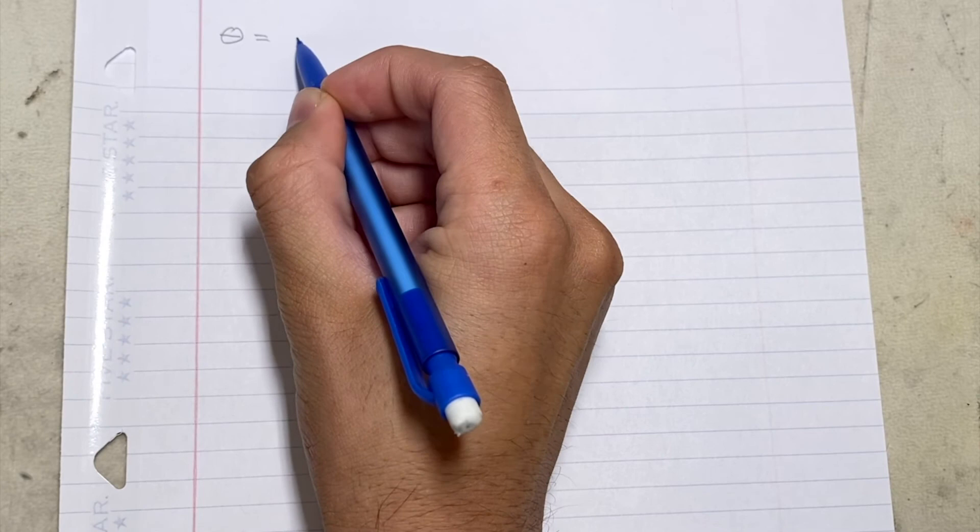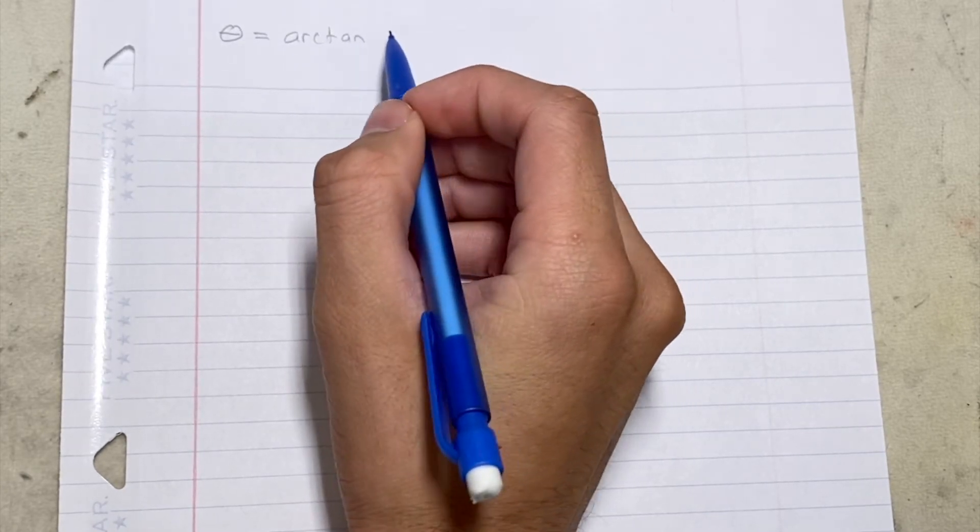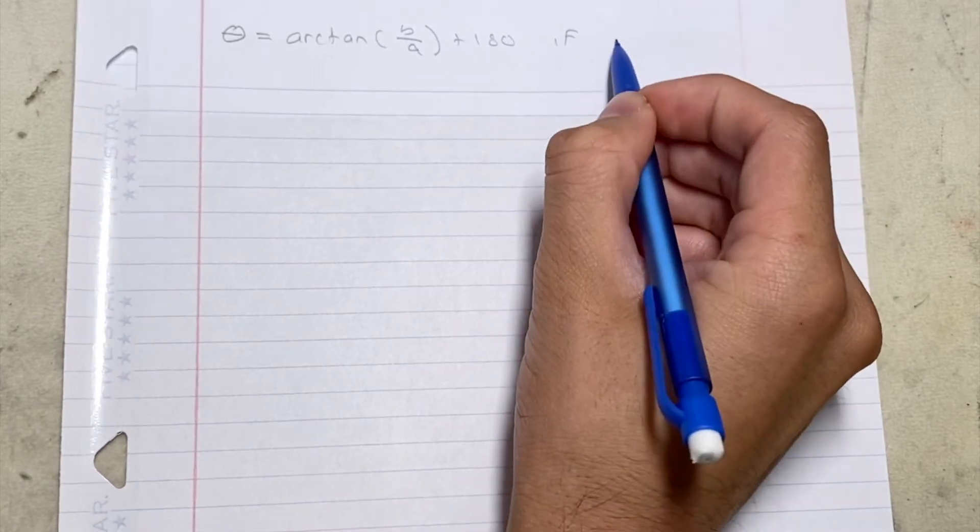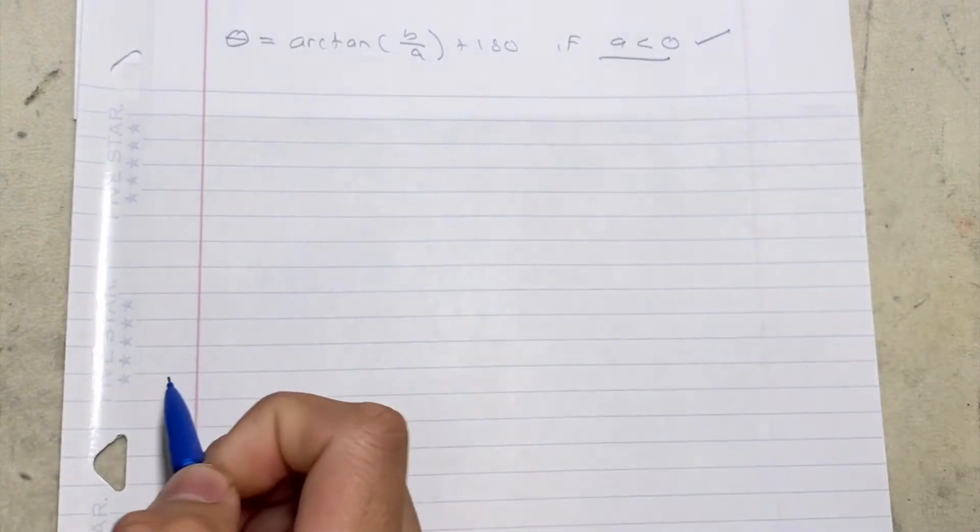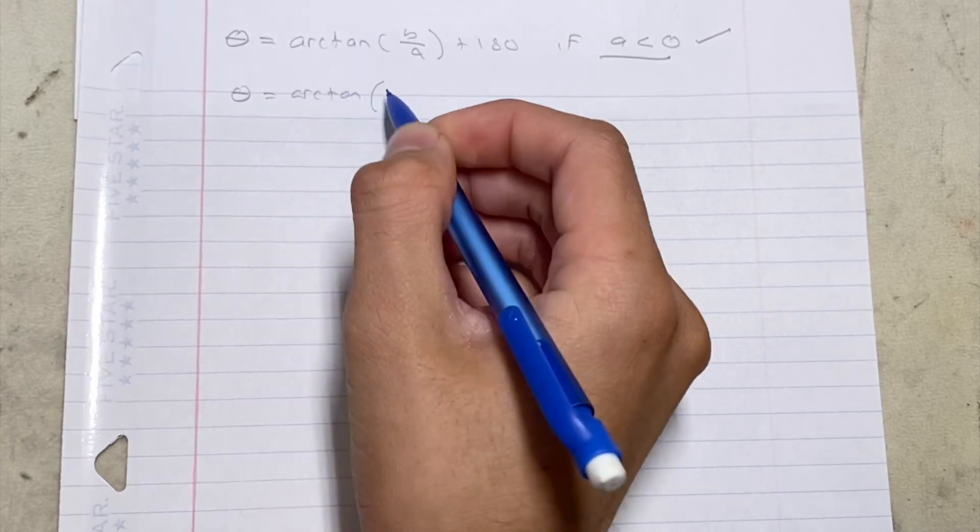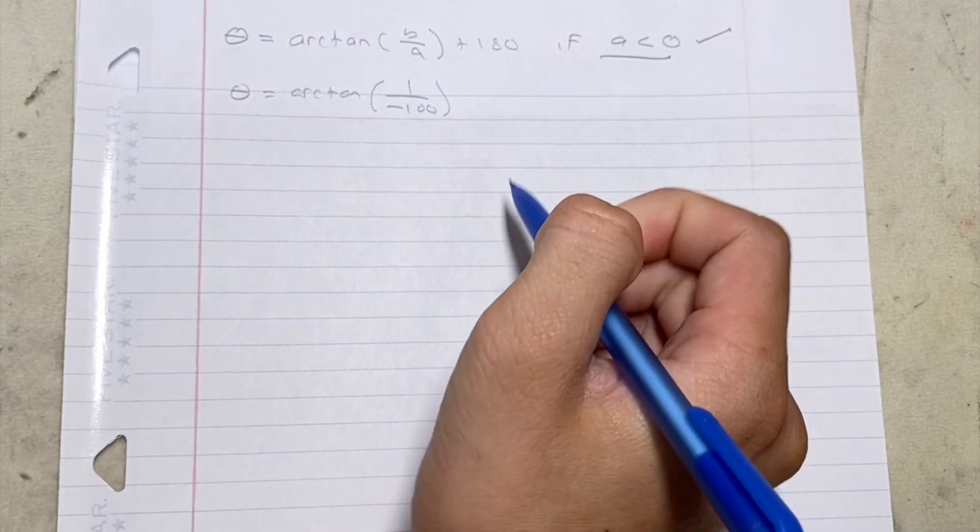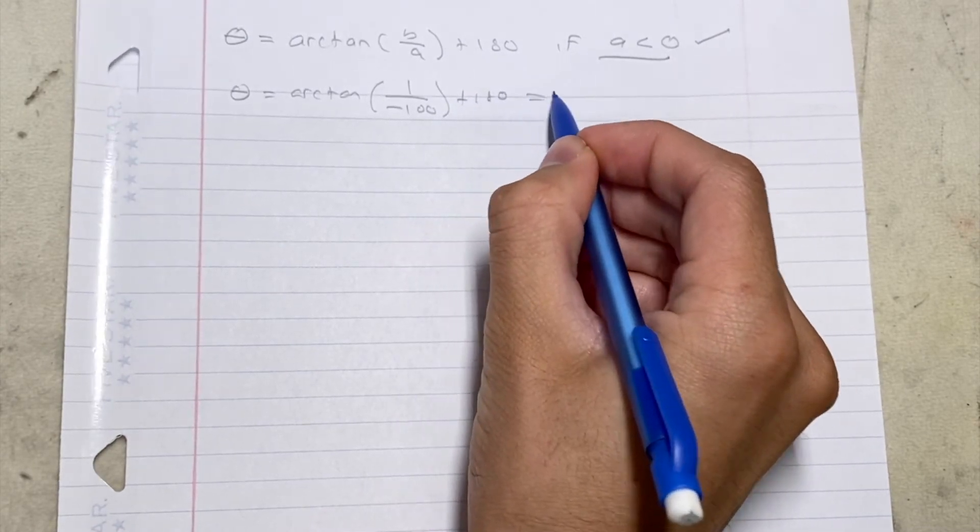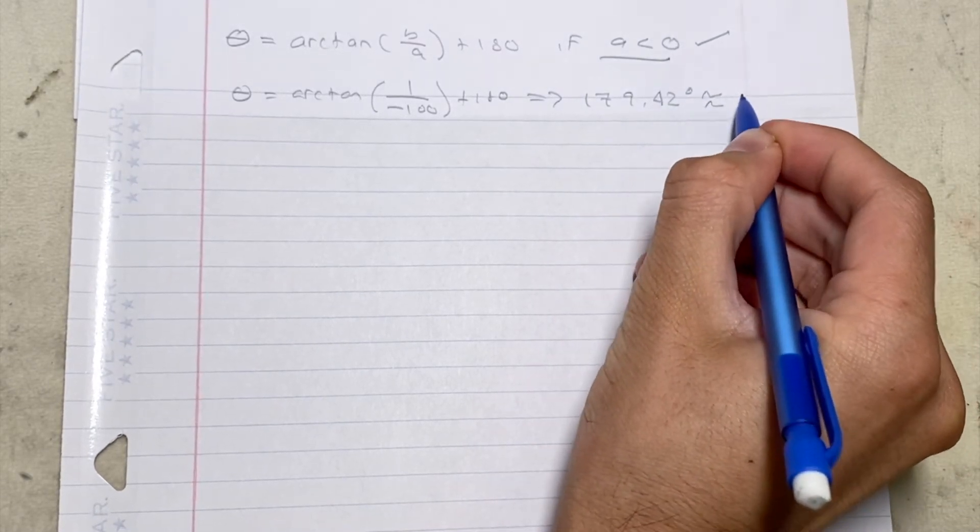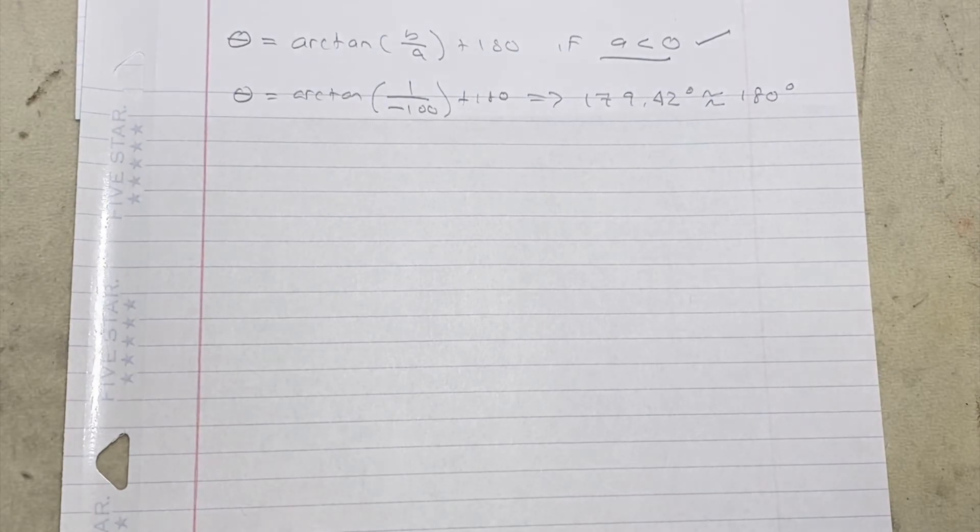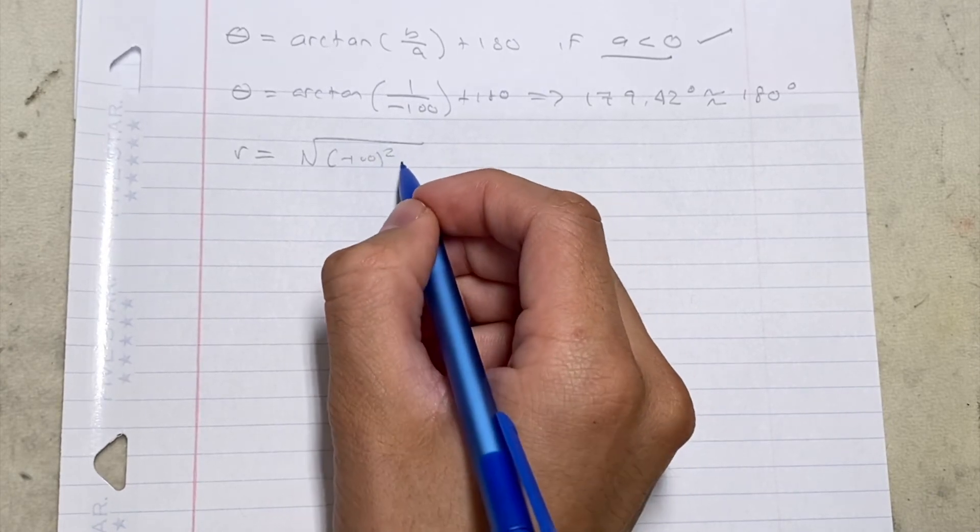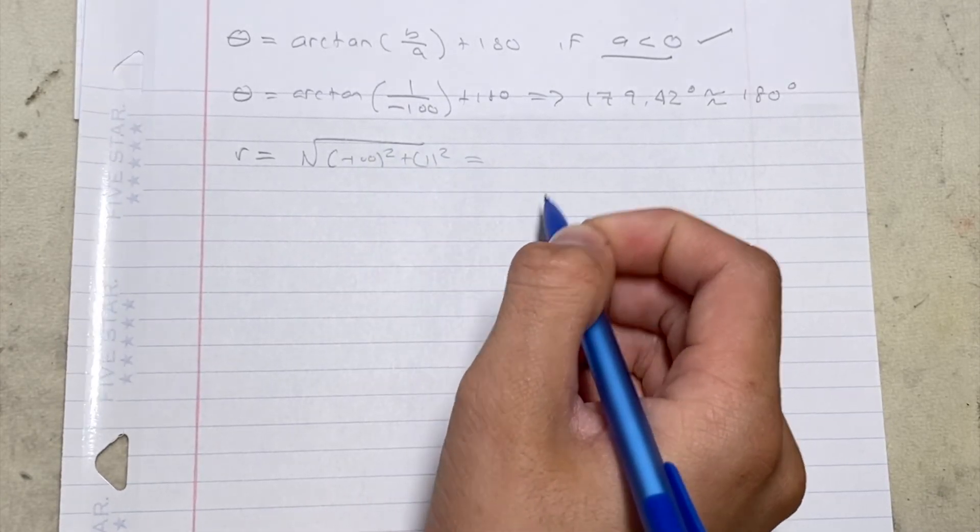Now we need to recall an identity that theta is equal to arctan of B over A plus 180 if A is less than 0. And in this instance A is negative 100 so that's satisfied. So I'm going to set it up theta is equal to arctan of 1 over negative 100 plus 180 degrees and we're going to get 179.42 degrees. This is roughly 180 degrees. Next we need to solve for r which is equal to the square root of x squared plus y squared which in this instance is negative 100 squared plus 1 squared which is equal to 100.